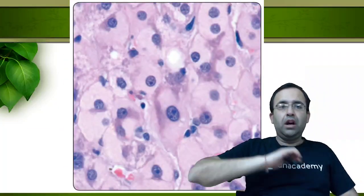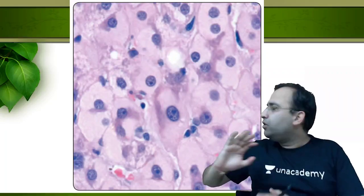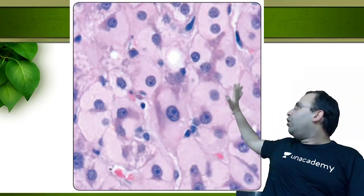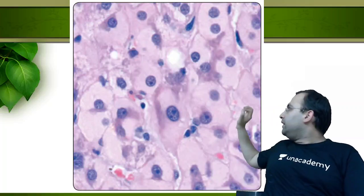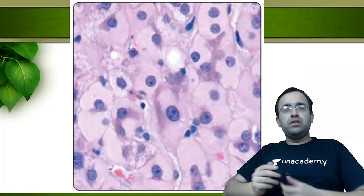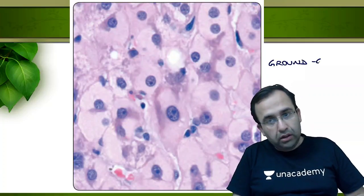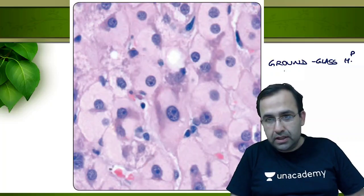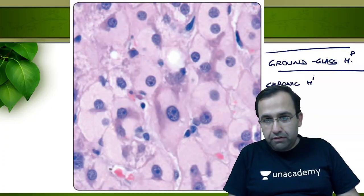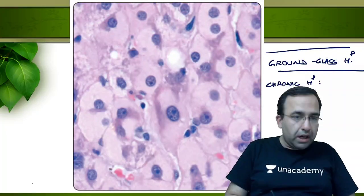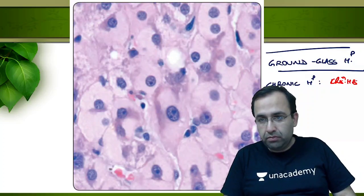Versus — have a look at this image. Again, the minute I see this, I can make out that the granularity of the cytoplasm is lost. All these are hepatocytes only — there is absolutely no doubt about that — but the problem is that the granularity of the cytoplasm is lost. They have become hazy or ground glass in appearance. So these are the ground glass hepatocytes, associated with chronic hepatitis. The most common chronic hepatitis associated with ground glass hepatocytes is chronic hepatitis B virus infection.